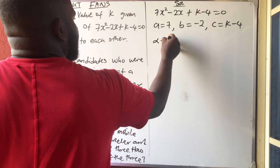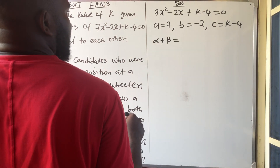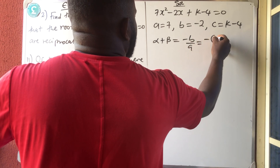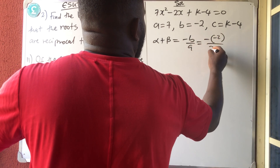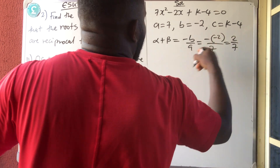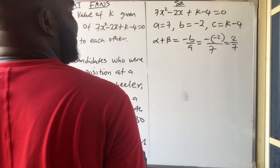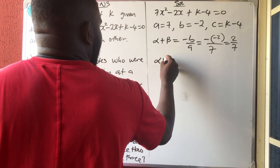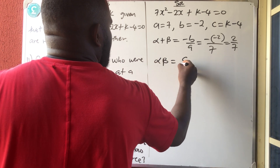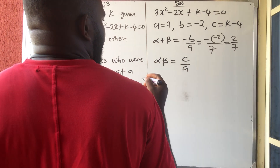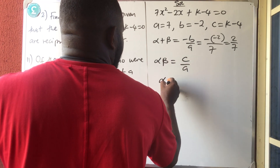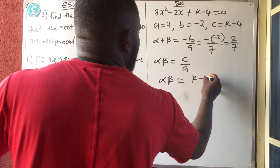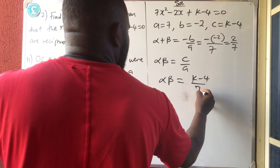Now, alpha plus beta — the formula is minus B over A — which is equal to minus of minus 2 all over 7, which is 2 over 7. I don't have any business here. Where I have business is where I have C, which is alpha beta. Alpha beta is equal to C over A, and alpha beta is equal to K minus 4 all over 7.